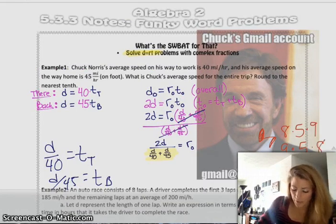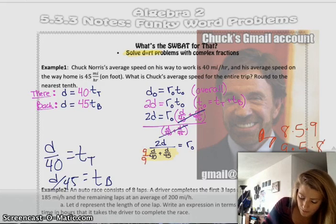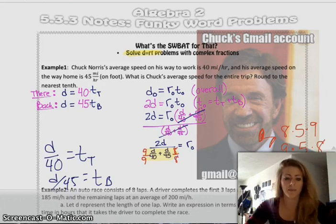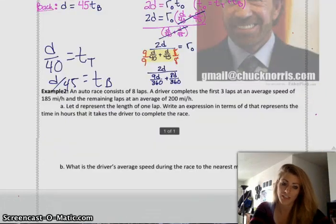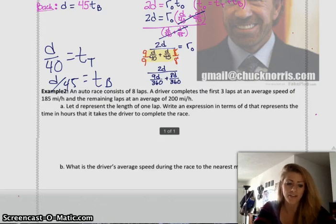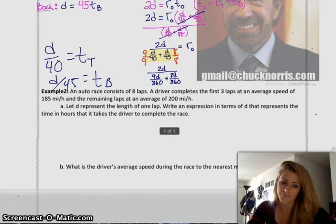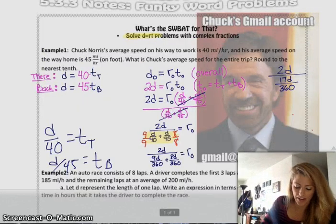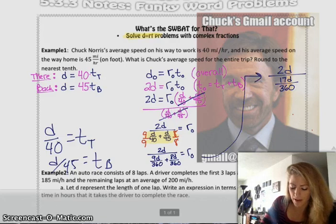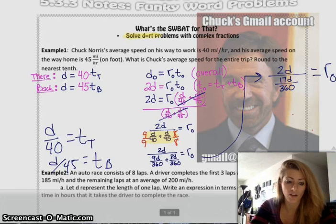So I have to multiply the first fraction by 9 over 9, and I have to multiply the second fraction by 8 over 8. And then we should get our common denominator, which is 360. So then we would write it as 9D over 360 plus 8D over 360. And now that they have a common denominator, I can add the two together. So I have 9D plus 8D, which is 17D, all over 360. Whew, isn't that fun?